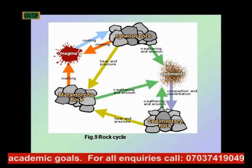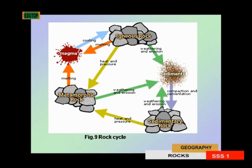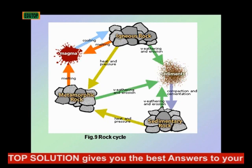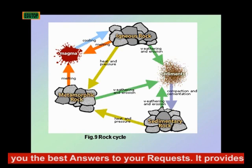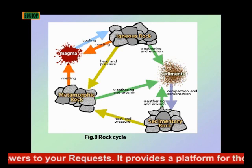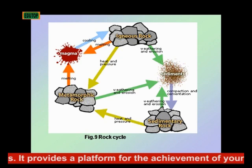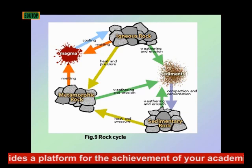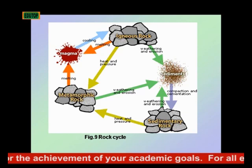Examples of plutonic igneous rocks include granite, gabbro, and diorite. The volcanic or extrusive igneous rocks are formed when magma cools or solidifies rapidly on getting to the surface of the earth. An example is basalt, which is a good example of an extrusive igneous rock.